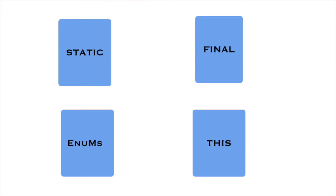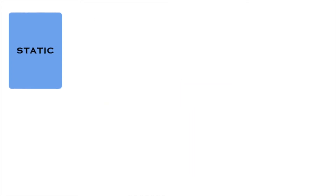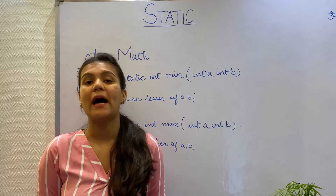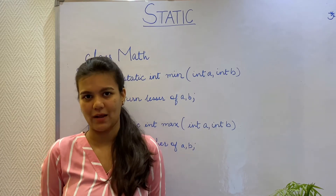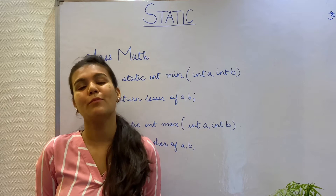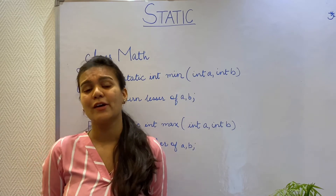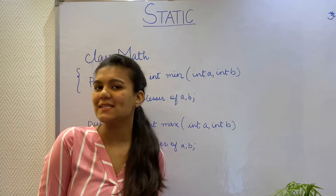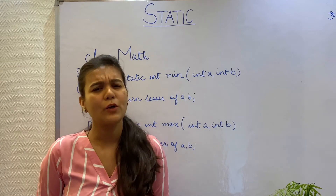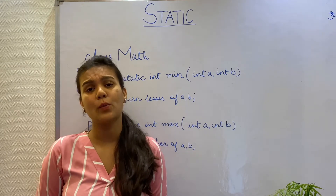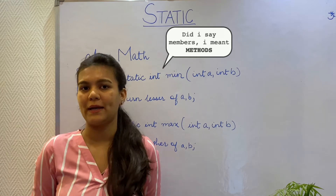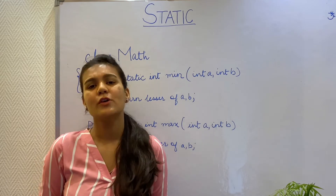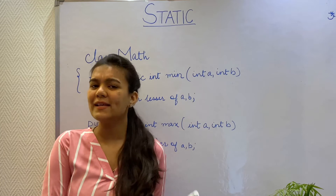The first keyword for the day is the static keyword. Whenever I have created classes in my previous videos, I have always created objects to access the members and methods of the class. The methods of the class more often than not are dependent on the instance variables of the class. There could be certain exceptional cases where the members or the behavior of the class is not dependent on the instance variables, so we don't need to create the instance of the classes.